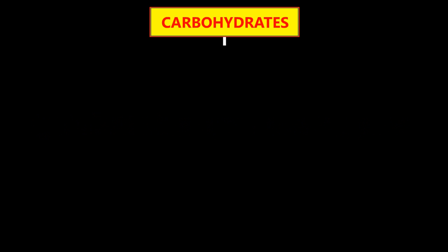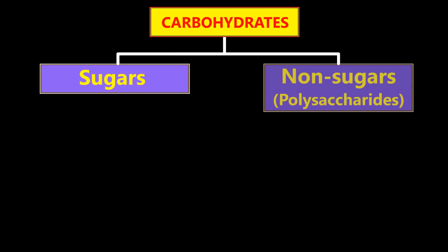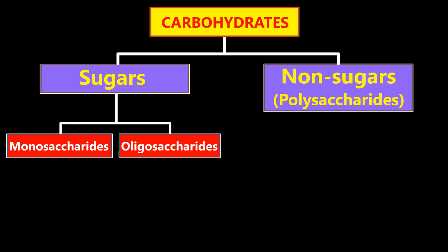How are the carbohydrates classified? Carbohydrates are classified into sugars and non-sugars. Sugars are subdivided into monosaccharides and oligosaccharides.